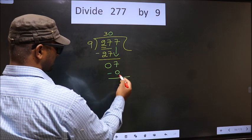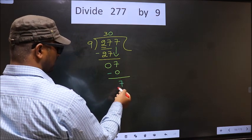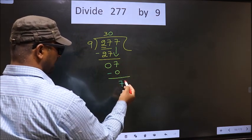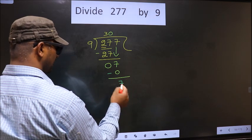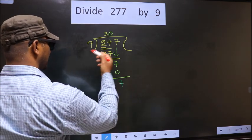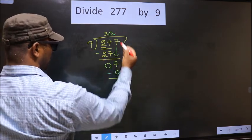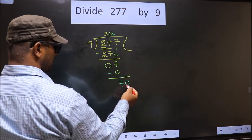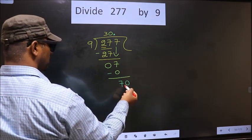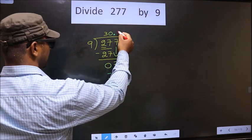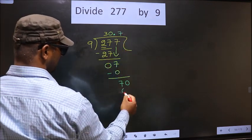Now, you subtract 7 minus 0, 7. Over here, we did not bring any number down. And 7 smaller than 9. So, now, you can put a dot and take 0 here. Here, 70. A number close to 70 in 9 table is 9 7s, 63.